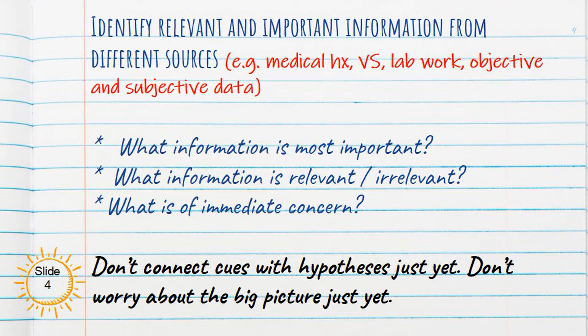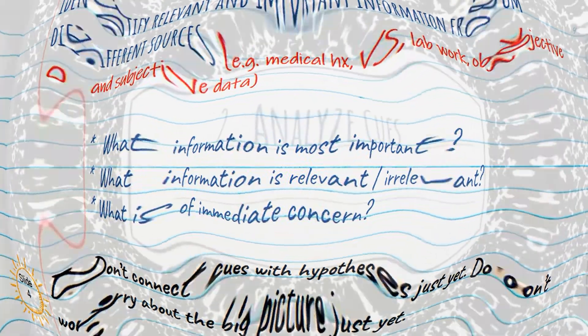We want to look at the information and see what information is most important. Pick that out — what information is relevant? What information is of immediate concern? Don't connect these cues with the big picture just yet. Don't connect these cues with the hypothesis just yet. Just look at the question and pick out the important information. That's step one: identify relevant and important information.